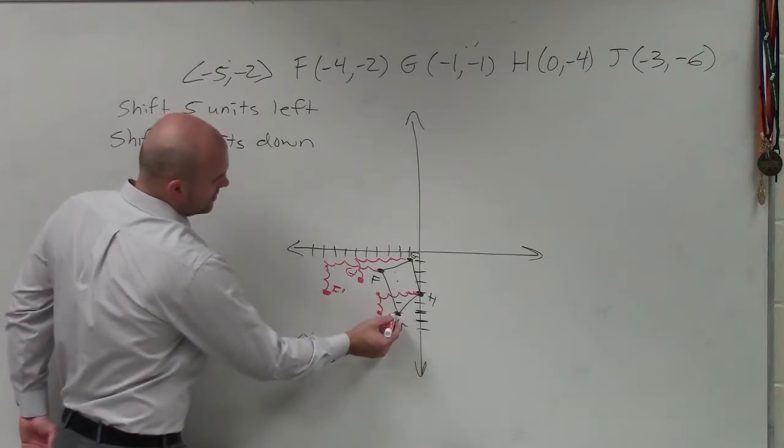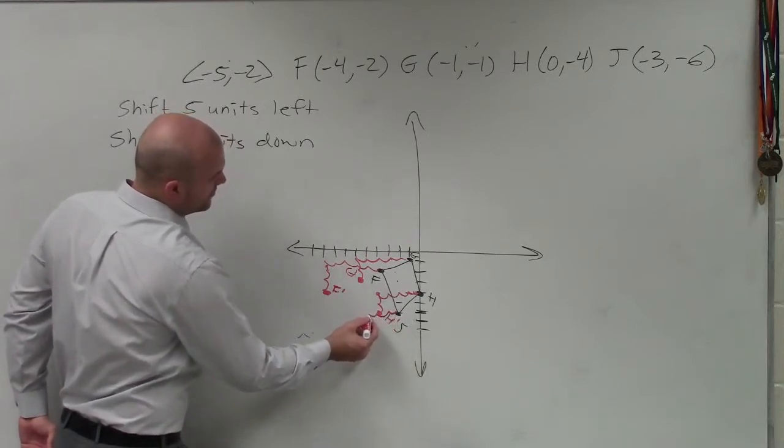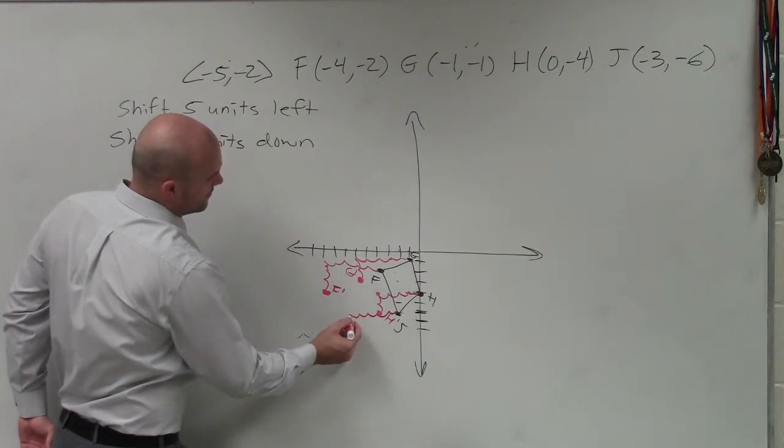And then J is 1, 2, 3, 4, 5, and then 1, 2.